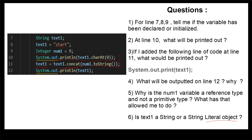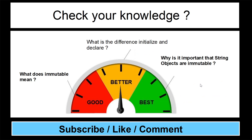Hopefully you got the majority of the questions right. The questions covered not only this video but also my previous videos on primitive and reference types, so if you got some wrong have a look at my playlist. Before you leave, make sure you can correctly explain what immutable means, tell me the difference between initialized and declared, and explain why it's important that string objects are immutable. If you found this video useful please like, and if you'd like to be notified when I start making mock exam programs please subscribe. I'll see you in the next video.